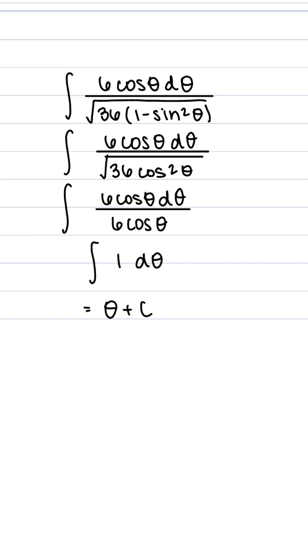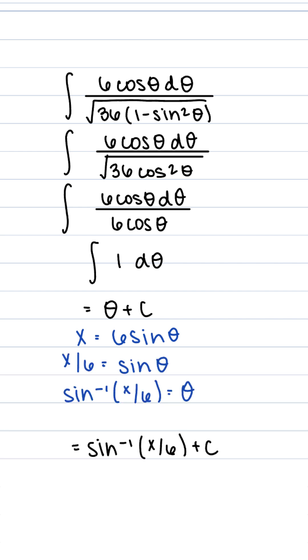Now we're not done yet because we started with a function of x, we want to end with a function of x. So here we have to use inverse sine of x divided by 6 in order to substitute theta back in. And this right here is our final solution.